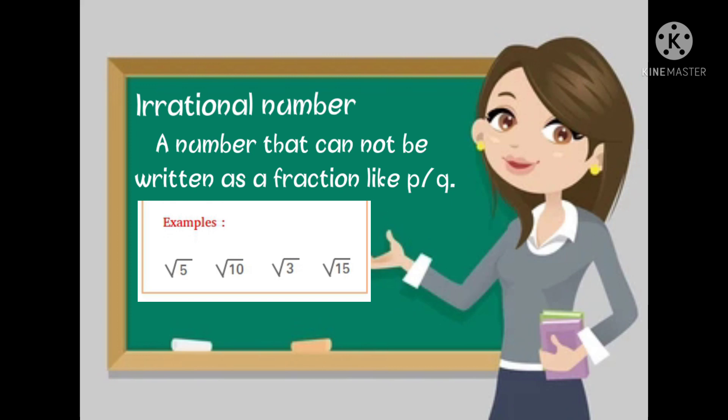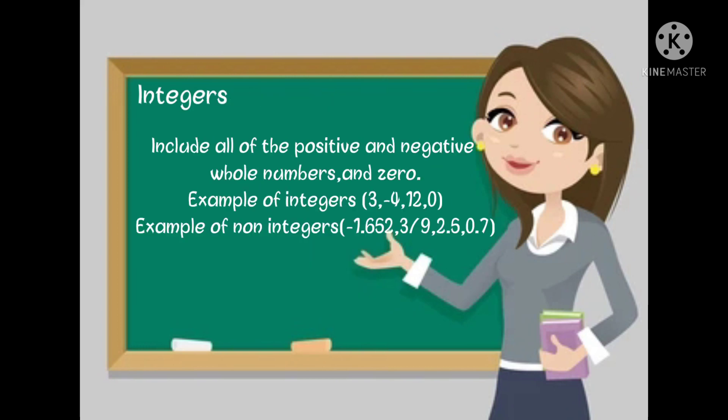Rational numbers are two types: integers and non-integers. Let's see integers. Integers include all of the positive and negative whole numbers and zero. Examples of integers: 3, -4, 12, and zero.